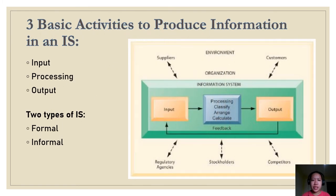There are three basic activities that produce information in an IS. First, input — which captures or collects data from within the organization or from its external environment for processing; normally input is a hardware component. Second, processing — which converts raw data into meaningful information; normally processing is done by software.